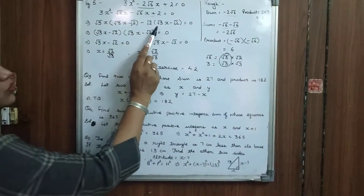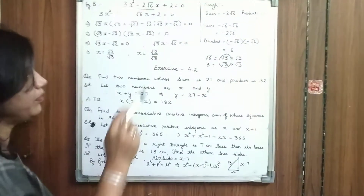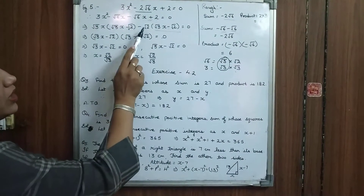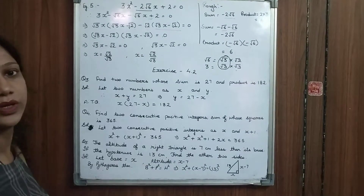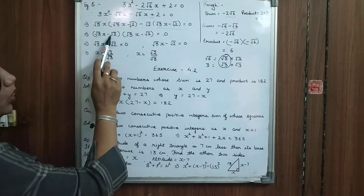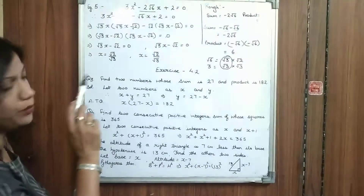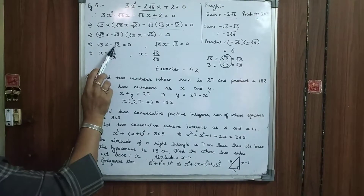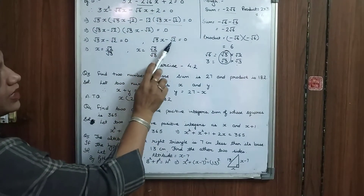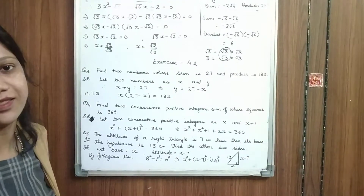Now √3x minus √2 is the same in both groups, so we can take them common. It's left here: (√3x minus √2) equal to 0. These are our two factors. We can set them separately equal to 0, so our x values are equal to √2 upon √3 and the same √2 upon √3. This is our answer.